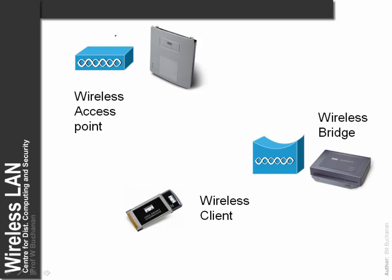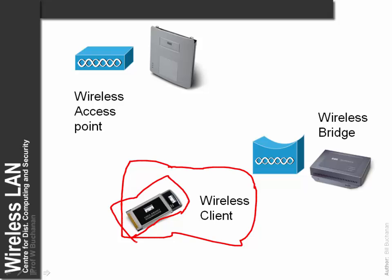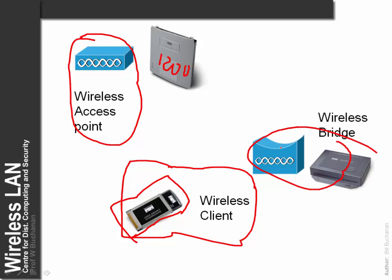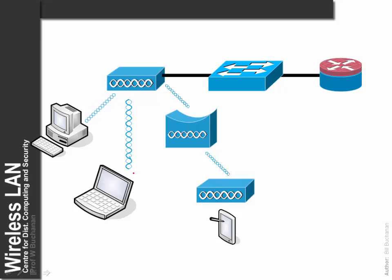The building blocks we have are typically a wireless client — in this case an interface that we plug into either a network card or a notebook — a wireless access point (in this case a Cisco 1200 device), and also a wireless bridge. We typically connect to a wireless access point, and if we need to bridge between two wireless domains we can use a wireless bridge.